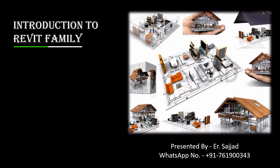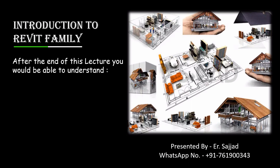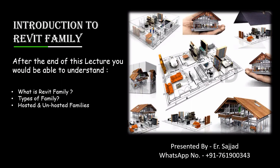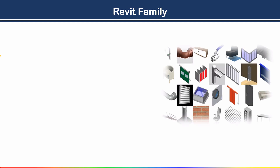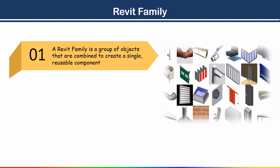Welcome back to the new lecture. In this lecture we are going to discuss Revit families. After the end of this lecture you will be able to understand what is a Revit family, what are the types of families, and finally we will discuss hosted and unhosted families. A Revit family is a group of objects that are combined to create a single reusable component. All elements we use, whether it is a wall, column, mechanical equipment, or annotation tag, are part of the Revit family.